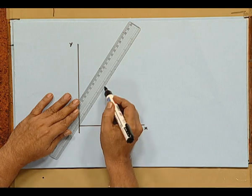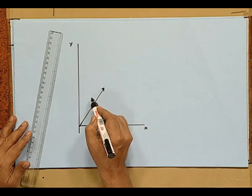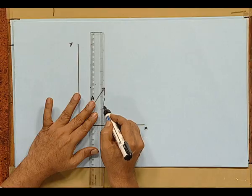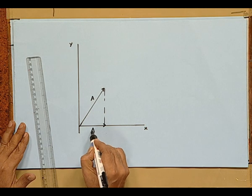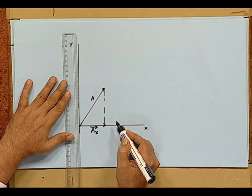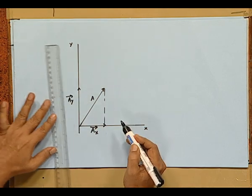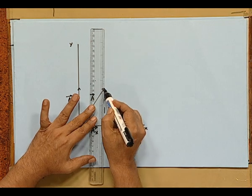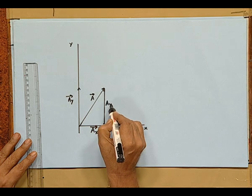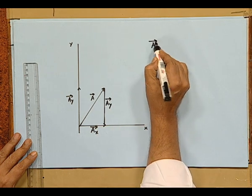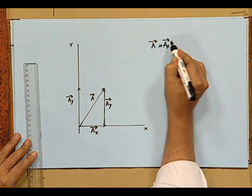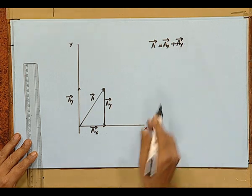Say for example, in the x-y plane, I have a vector a. This vector a is resolved into two perpendicular components by dropping a perpendicular. Along the x-axis, it is written as vector ax. The y-component is indicated in the y-direction as vector ay. Vector a can be written as ax vector plus ay vector. ax vector and ay vector are called the vector components along the x and y direction.